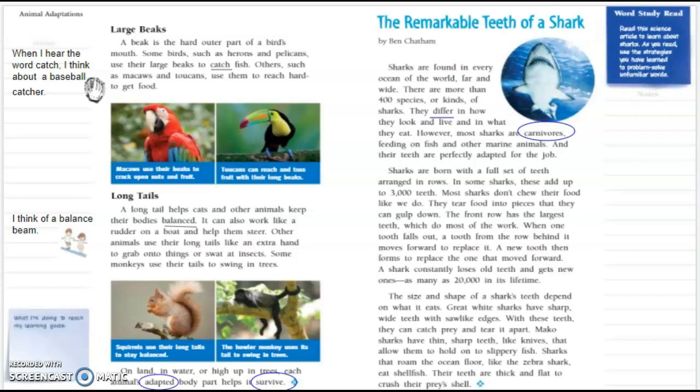Sharks that roam the ocean floor like the zebra shark eat shellfish. These teeth are thick and flat to crush their prey's shell.